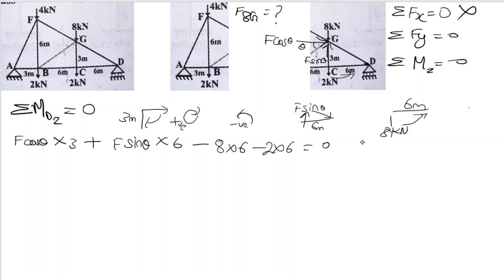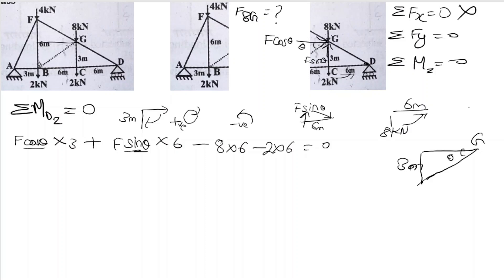First we need the angle θ — we need sin θ and cos θ. From the diagram, one side is 3 meters and the other is 6 meters, so the hypotenuse is root of (3² + 6²) = root of 45 = 3 root 5.